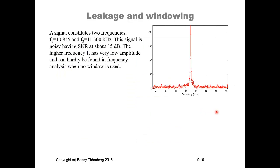This is an example. It's a signal that constitutes out of two frequencies, 10.855 kHz and 11.300 kHz. And it's a very noisy signal that has a signal-to-noise ratio of about 15 dB. And the higher frequency, F2 on 11.3 kHz, has a very low amplitude and can hardly be found in the frequency analysis when no window is used. So here you have the first frequency and the F2 is residing somewhere here. But it's kind of difficult to distinguish between the first frequency component and also with this noise present.